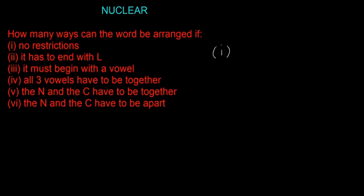Question one: if there are no restrictions, we have seven different letters in 'nuclear' and the answer is just 7 factorial, because there are no restrictions — we're just arranging letters in a sequence. 7 factorial is going to be 5,040.